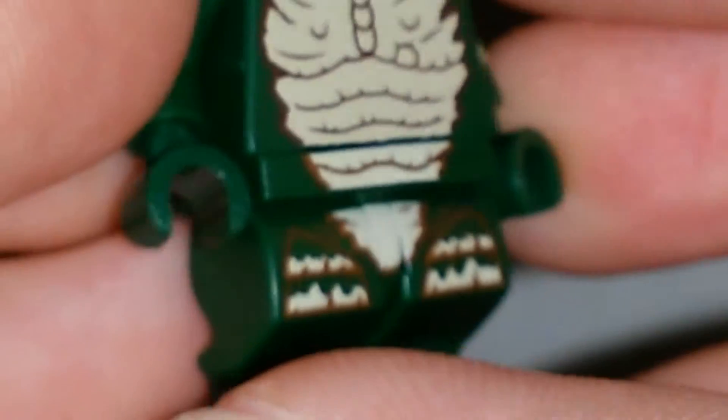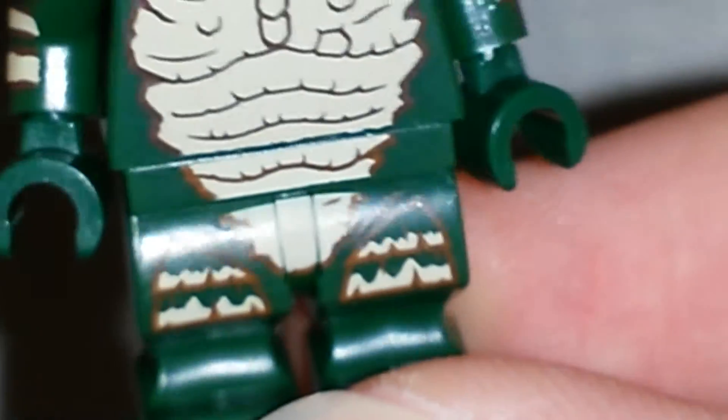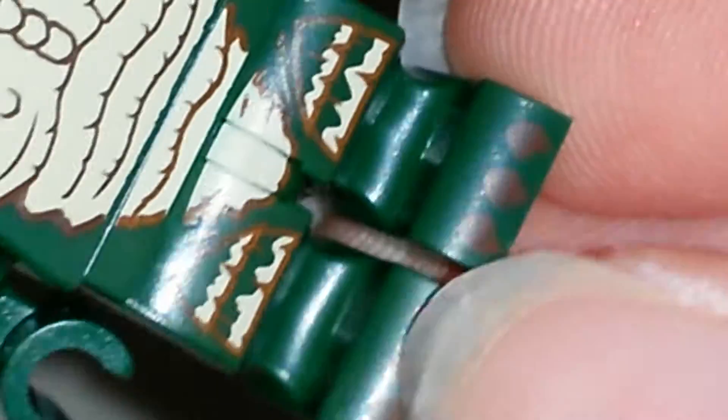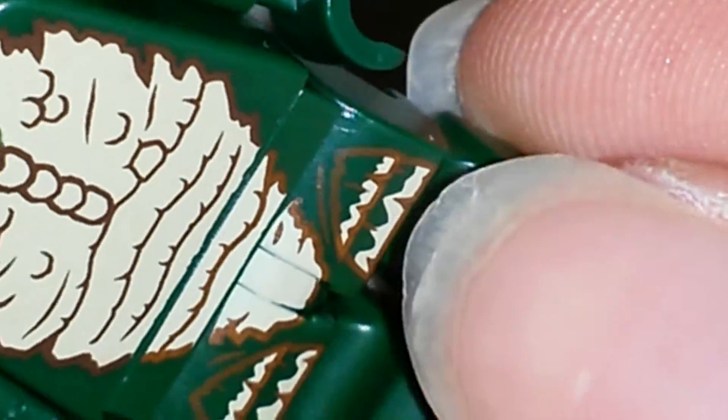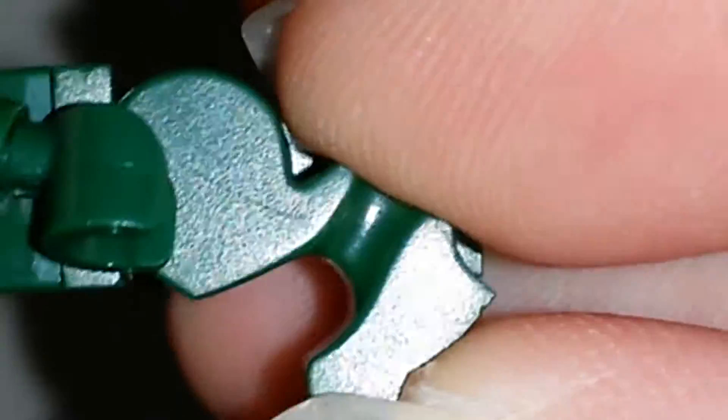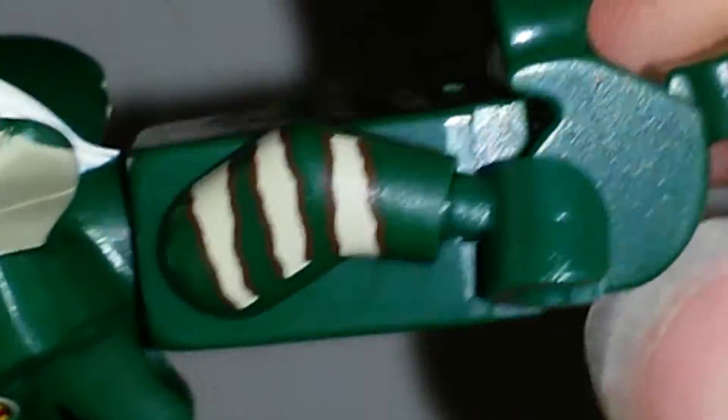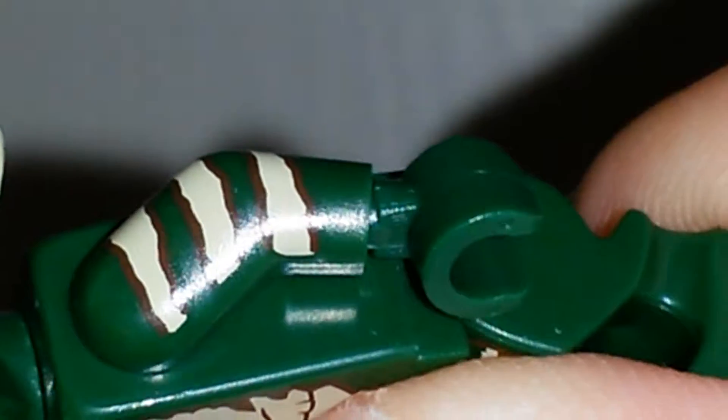And the legs are custom made for this figure I think. Maybe they were used for skeletons. They look specifically used for this though. Even the little toes there and the little scales there. They don't bend too far forward, but they bend all the way back. Something very different with this set.